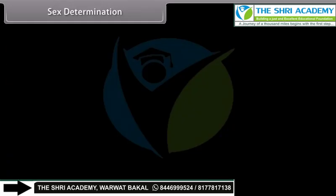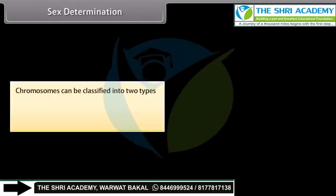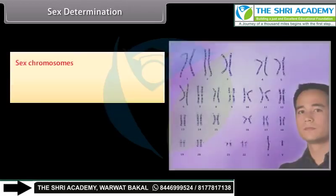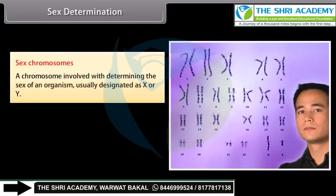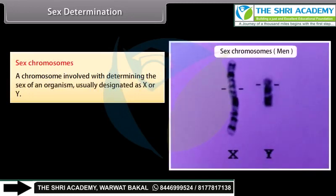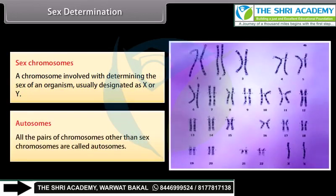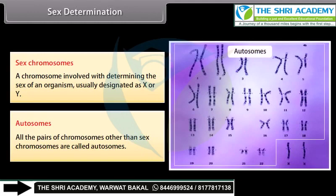Sex Determination: Chromosomes can be classified into two types — sex chromosomes and autosomes. Sex chromosomes are chromosomes involved in determining the sex of an organism, usually designated as X or Y. Autosomes are all the pairs of chromosomes other than the sex chromosomes.